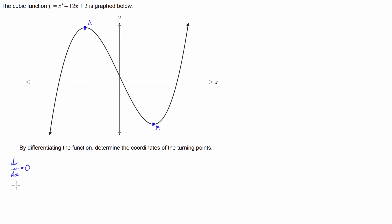To start with, we'll differentiate this. dy/dx is going to be equal to 3x squared minus 12. Now, the only tricky part of this question really is we have to try and make this equal to 0 without using a calculator. So the best thing to do is to do a bit of factorization.